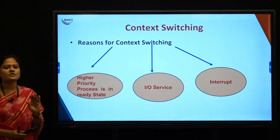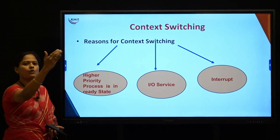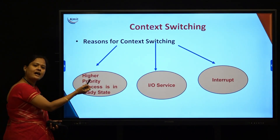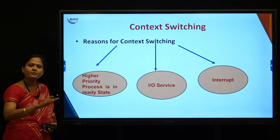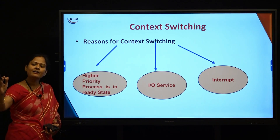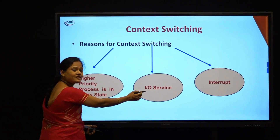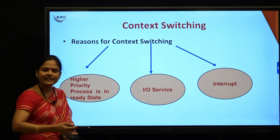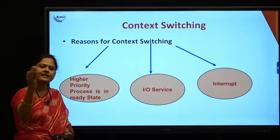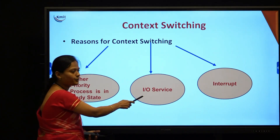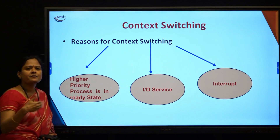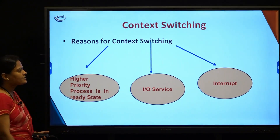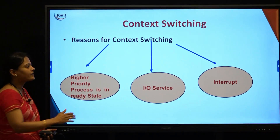Context switching means the CPU stops one process and moves to another. The reasons for this are: a higher-priority process may arrive while executing the current one; the currently executing process may require I/O service, so the CPU cannot remain idle and picks the next process from the ready queue; or an interrupt generated by the system requires the CPU to stop the current process and move to the next. These are the reasons why we go for context switching.